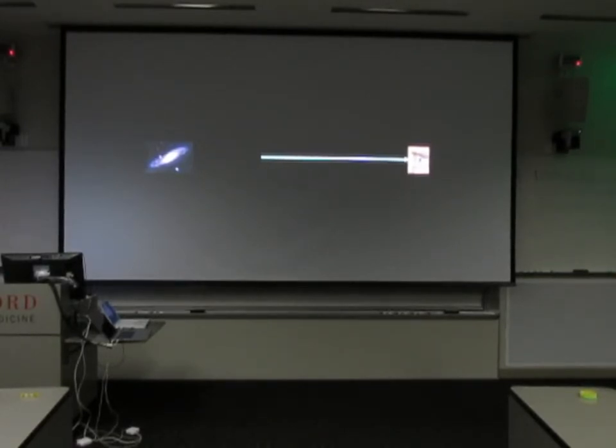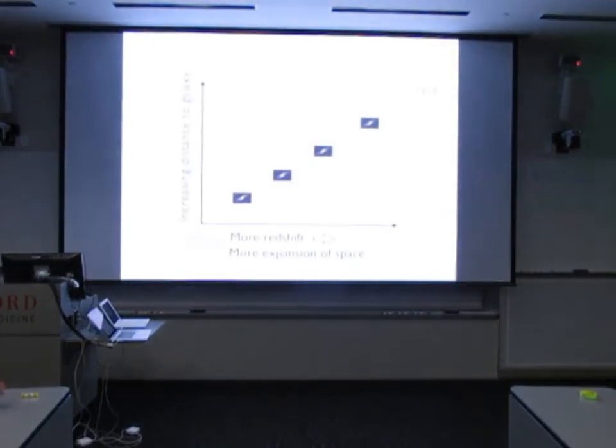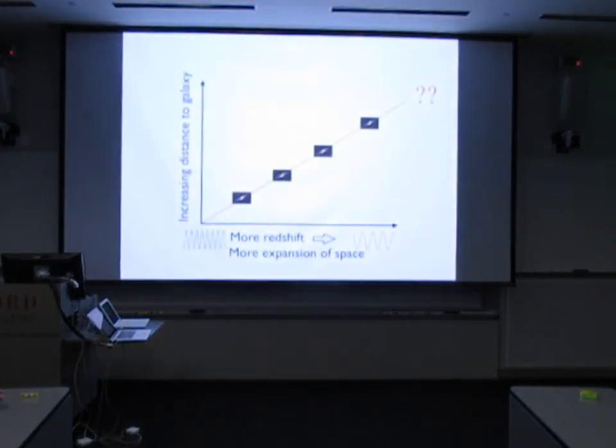We can't just lay out a tape measure, but one thing we can do is if we can identify objects in the universe that have a known brightness, so they all have the same brightness.